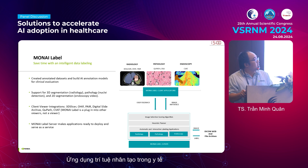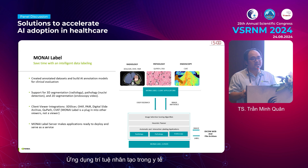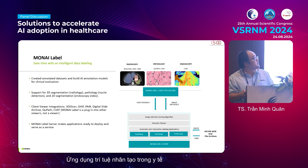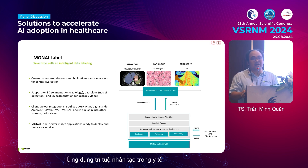MONAI Label can be installed on-premises, meaning you can install it on a separate machine and your workstation application can call the API or the inference microservice. In radiology, you can leverage the power of 3D Slicer; in pathology, we can use QuPath; and in endoscopy, we can use CVAT to annotate your data for further analysis.